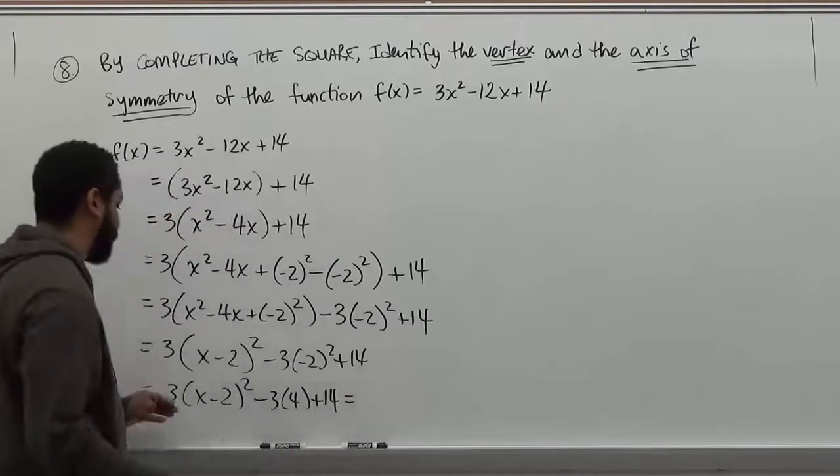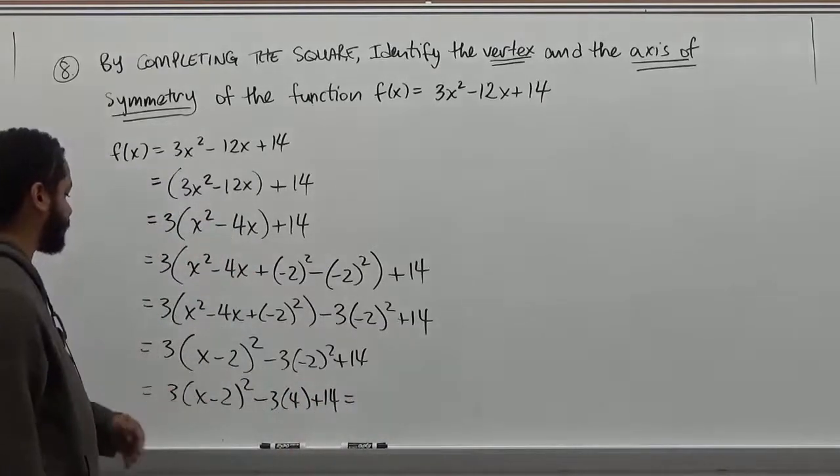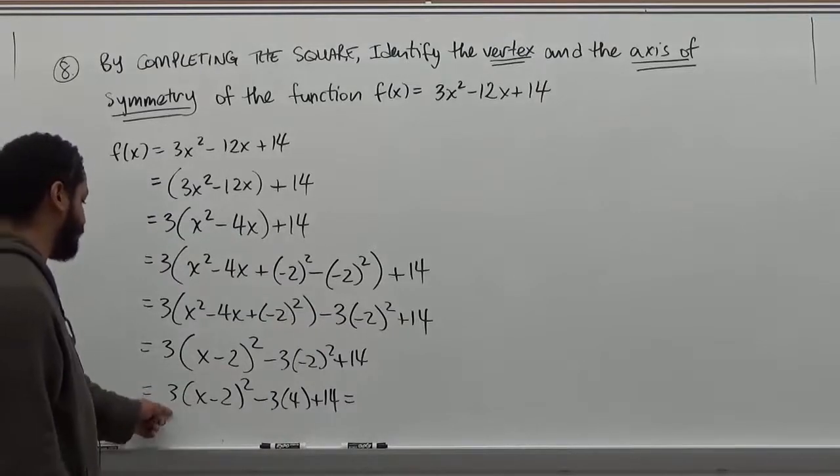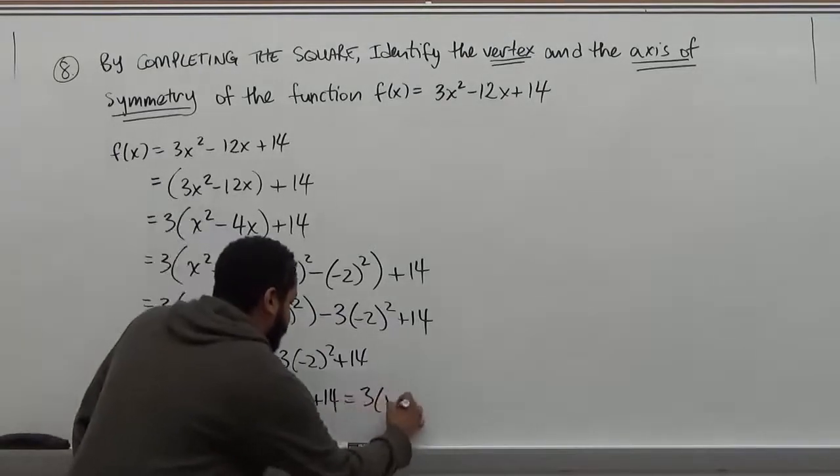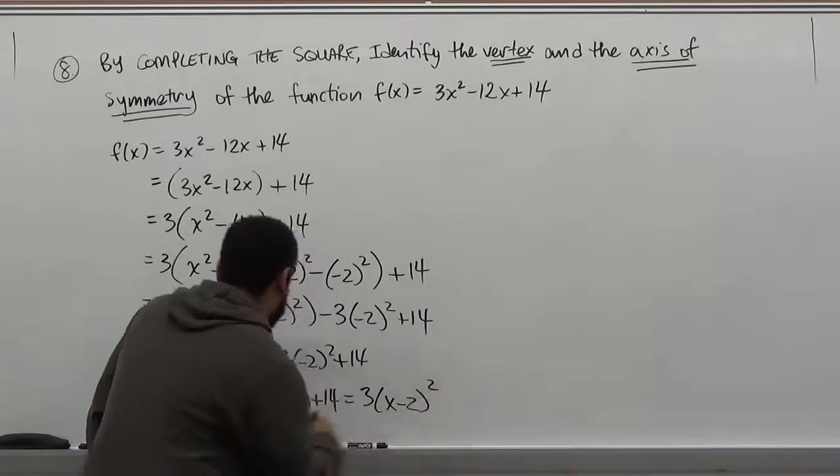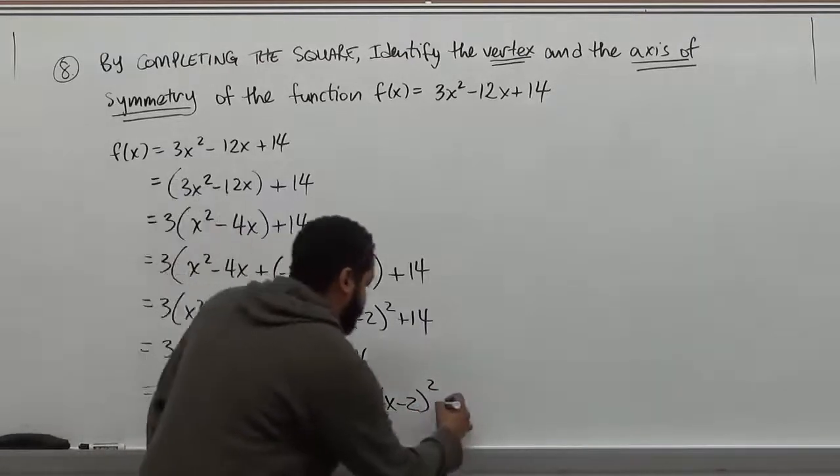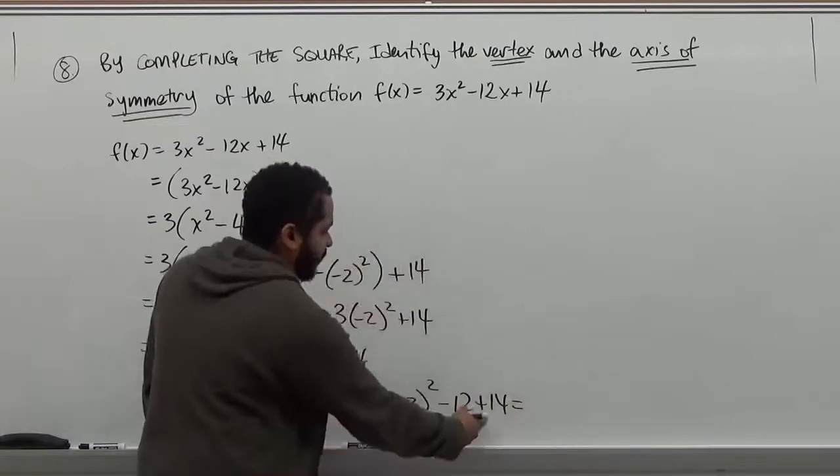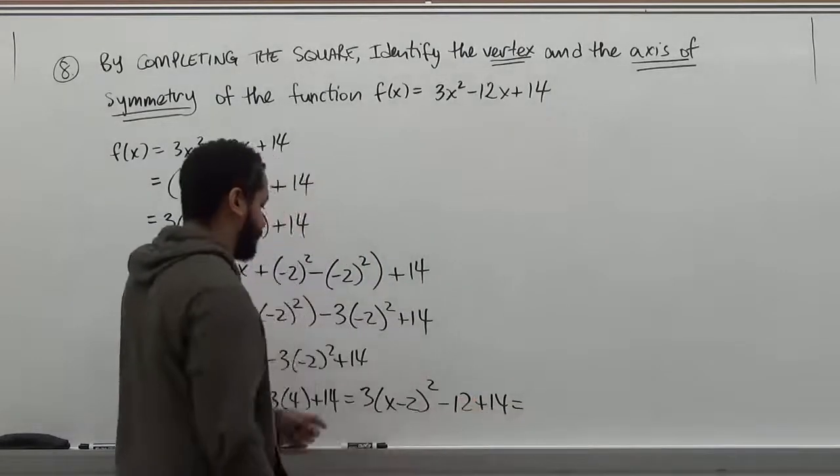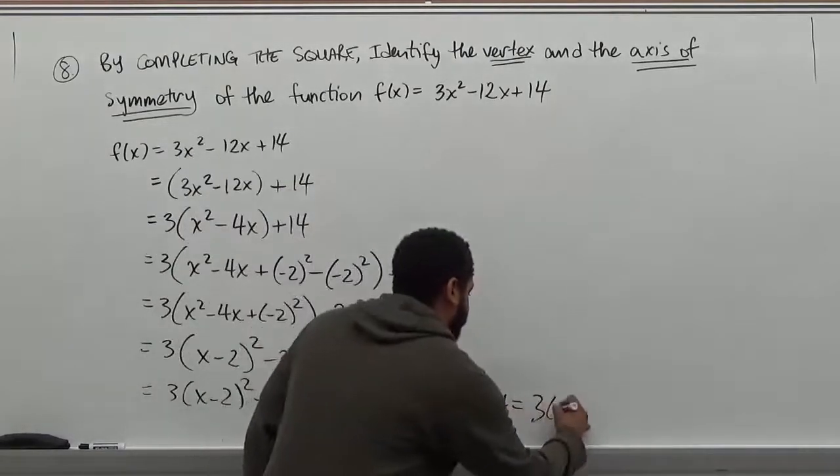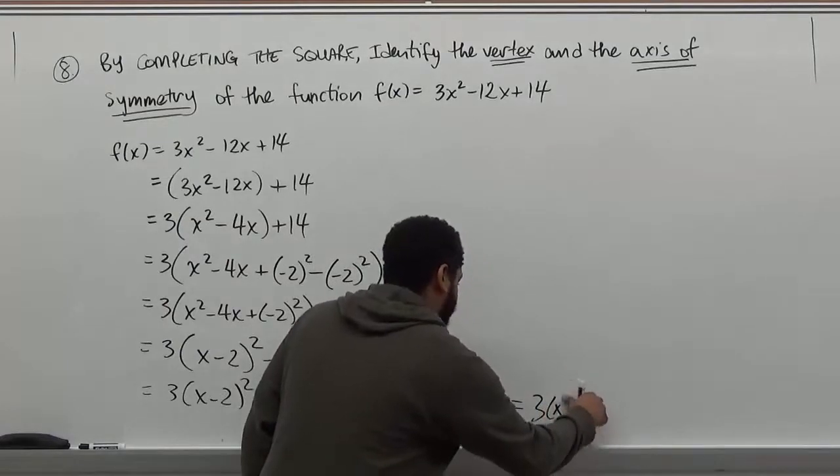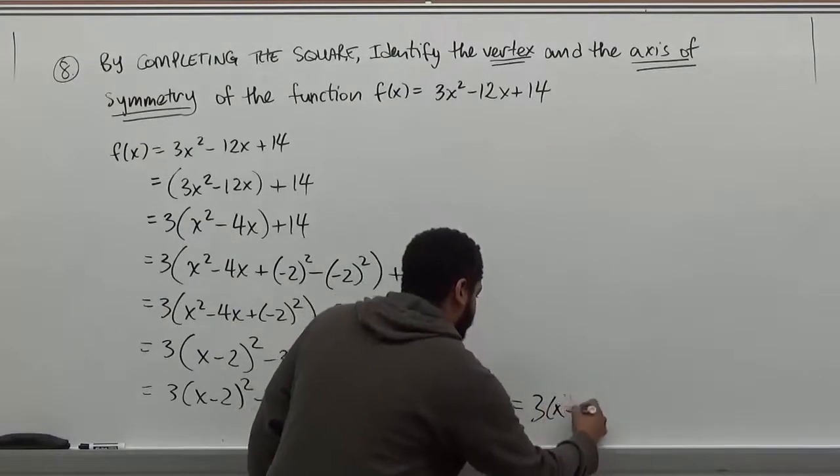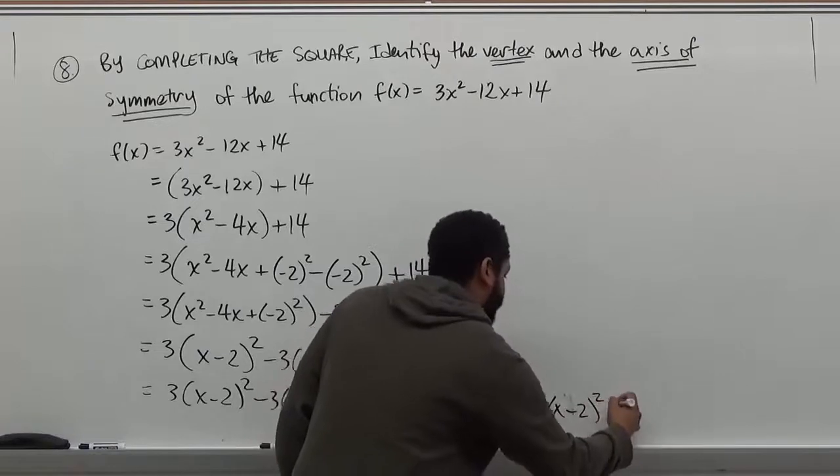And we can further evaluate this to get the completed square, which is the standard form of this equation. So we have 3(x - 2)². -3 × 4 is -12 + 14. And this we could evaluate further by combining these like terms. So here we get 3(x - 2)² + 2.